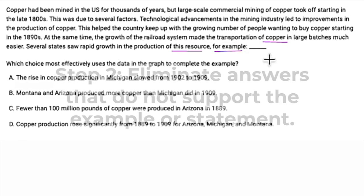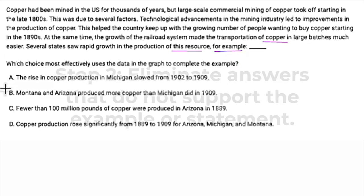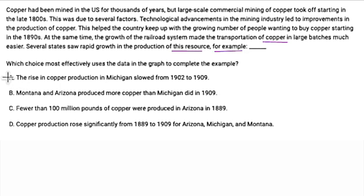Step two is to eliminate answers that do not support the example or the statement. In this case it says 'for example.' The rise in copper production in Michigan slowed — that is not what I'm looking for. Remember, I'm trying to find rapid growth in several states. Montana and Arizona produced more copper than Michigan — that's comparing states' production rather than showing growth in a lot of states. Fewer than 1 million pounds were produced in Arizona — no. And then D: copper production rose significantly for Arizona, Michigan, and Montana. Beautiful, that's exactly what I was looking for. Circle my answer.